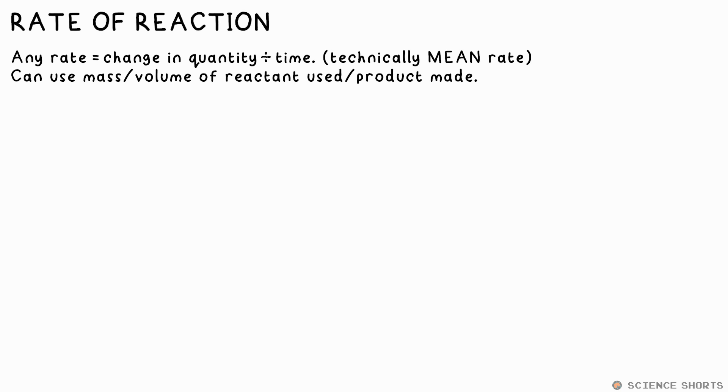So we could measure a change in mass or volume of gas that's made, or a color change for example. The boards however like to stipulate that this technically gives us mean rate, as the rate could be changing over the time you measure. But that's true for any measurement made over time ever, so that's a bit redundant, but we'll go with it.